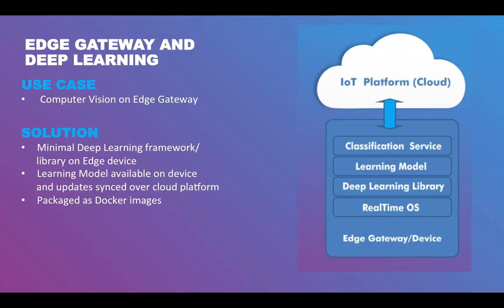The following slide shows the stack view of employing a deep learning API on the edge. The stack consists of a real-time OS, a deep learning library, the learning model, and the classification code for classifying objects. The learning model is essentially some representation like an object graph which is derived from training on images.